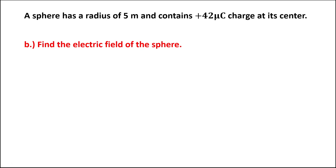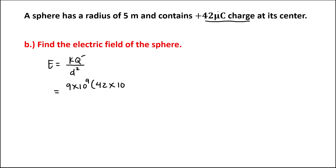Then to find the electric field of the sphere, the formula for the electric field is equal to k, the Coulomb's constant, times the charge over the distance squared. From the given, k is 9 times 10 to the power positive 9, times q which is 42 times 10 to the power negative 6, over the distance — since the charge is at the center, the distance is the radius, so 5 squared.